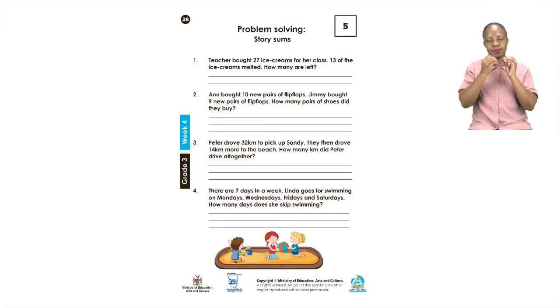Number one says teacher bought 27 ice creams for her class. 13 of the ice creams melted. How many are left? Now it looks like we are going to be subtracting. So the first number we are going to write is 27 and then we say minus or take away or subtract 13. So it is 27 minus 13. The rest of that one I am sure you can do by yourselves and you can tell us how many ice creams are left.